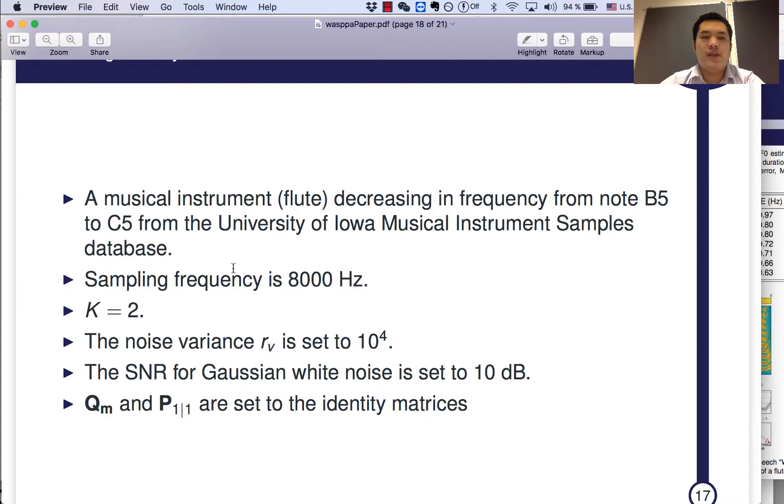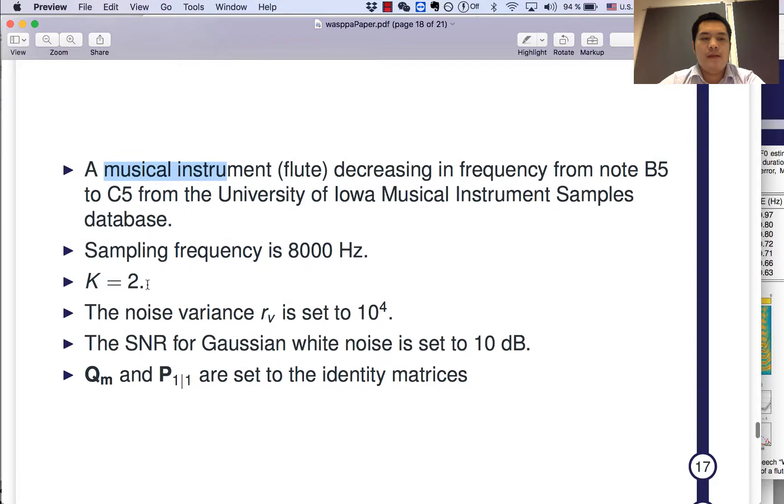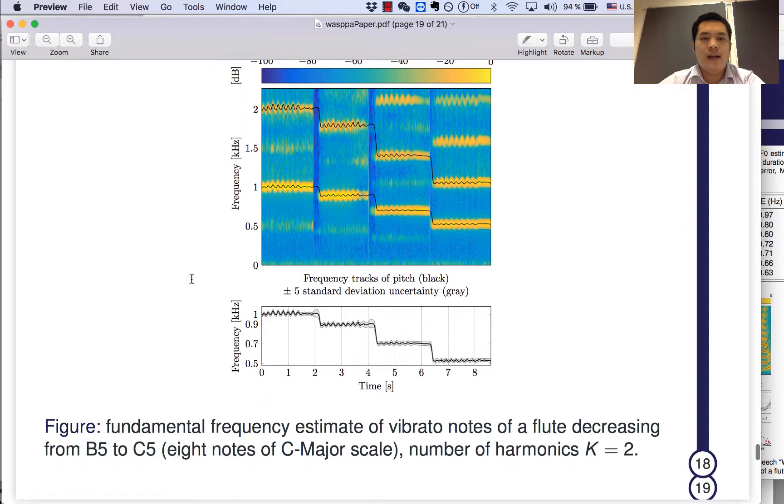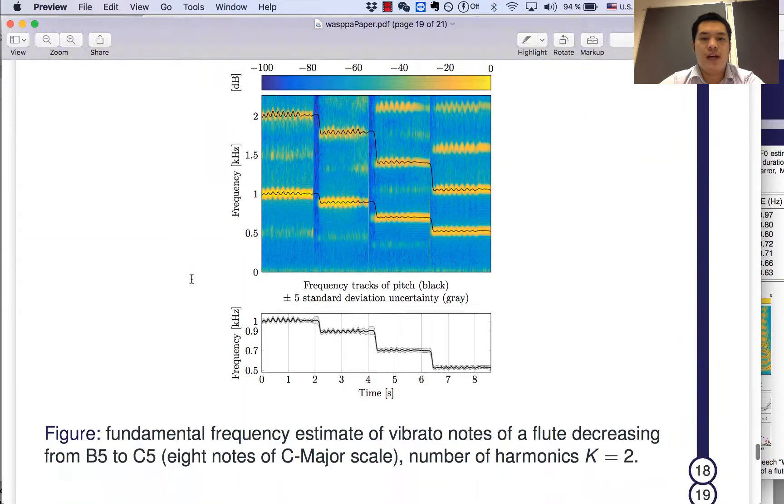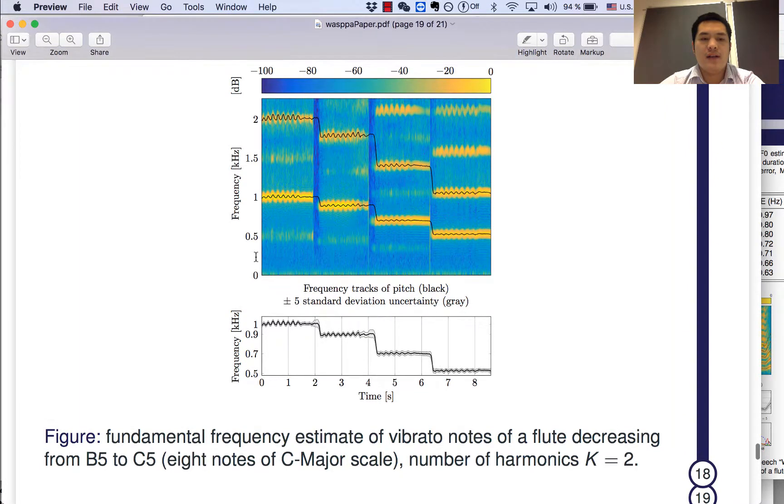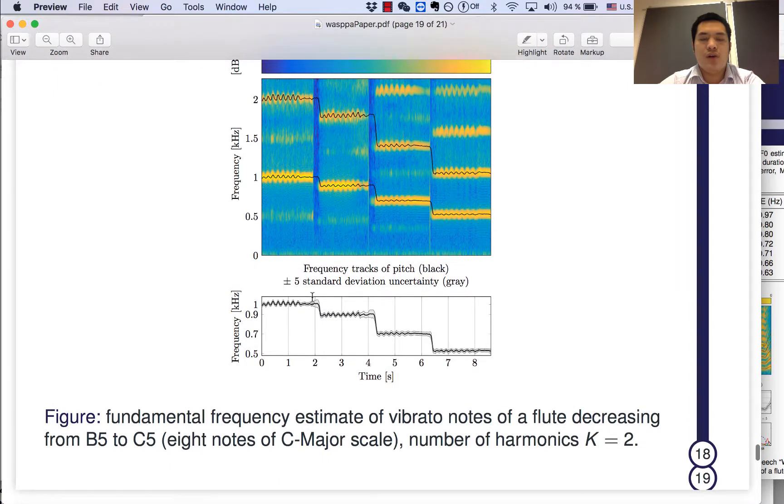In addition, we test our algorithm for musical instruments decreasing in frequency from note B5 to C5 from University of Iowa musical instrument sample database. The harmonic number in this case is set to 2. This is the flute signal, which has a vibrato sound in it. As you can see here, from the spectrogram, our Kalman filter-based method can track the pitch very nicely. And also note that during the transition period, we have a larger uncertainty than in other areas.